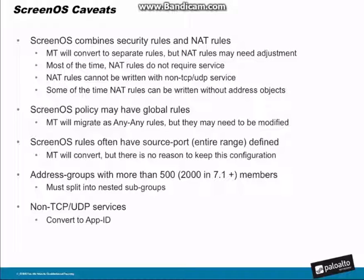ScreenOS also has a tendency to migrate in source port ranges, and they may have the entire range — 0 to 65,535 — which is pretty much an unnecessary configuration. It won't hurt anything, but you may or may not decide to strip that out. As with all vendors, there may be address groups with more than 500 or 2,000 members if migrating to 7.1 and above, so you have to split these into nested address groups. The migration tool will do that for you, but you have to run that feature. Also, non-TCP and UDP services have to be converted to App-ID.